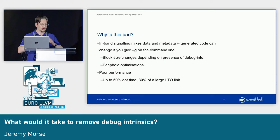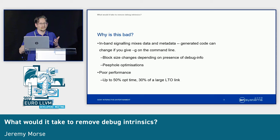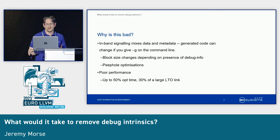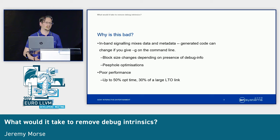It's also incredibly poor performance. A few years ago there was an experiment that found about 50% of opt spent its time with debug info just stepping through debug intrinsics. They can appear in packs of hundreds at a time between every single instruction in your program, completely irrelevant to the optimization that's happening. For a large internal C++ code base we have, for a full LTO link, it spends 30% of its time maintaining variable location information, which is an absolutely huge amount of time for what it is.